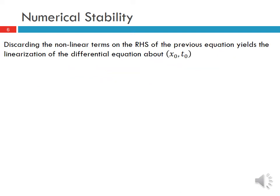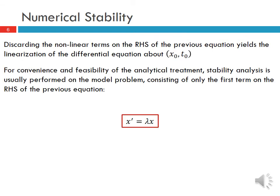Now we discard the nonlinear or higher-order terms to yield the linearization of the differential equation about (x₀, t₀). For convenience and feasibility of the analytical treatment, the stability analysis is usually performed on the model problem, which consists only of the first term on the right-hand side: x' = λx. Discarding the other terms does not significantly affect the results of the stability analysis. This is the model equation we will apply for each method to understand its stability.